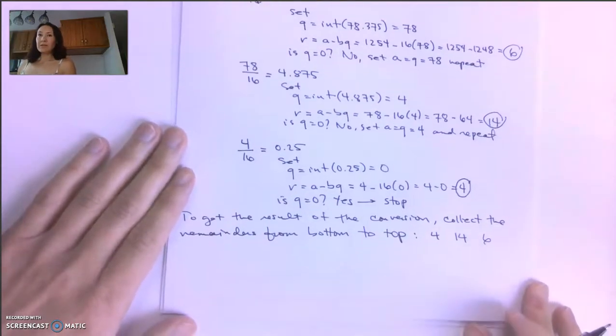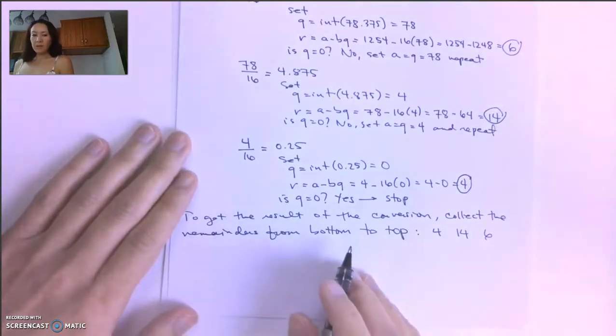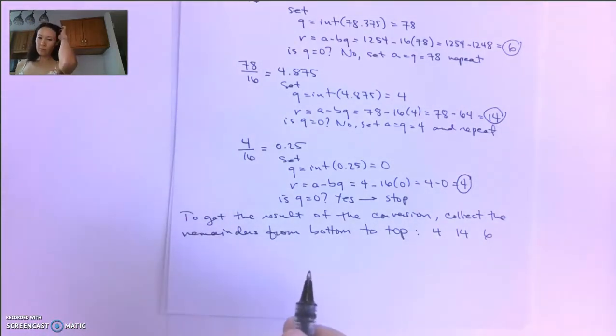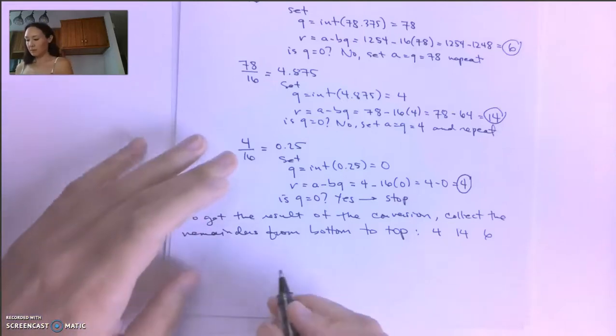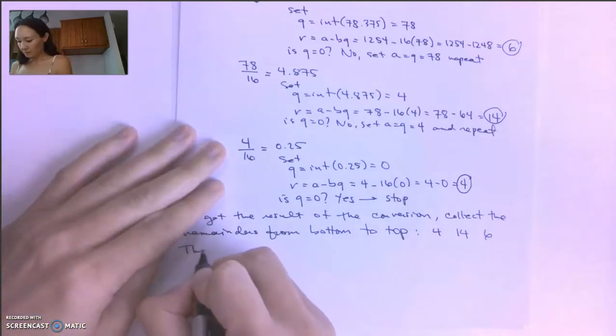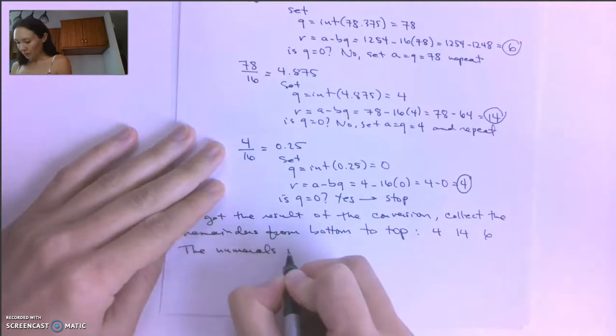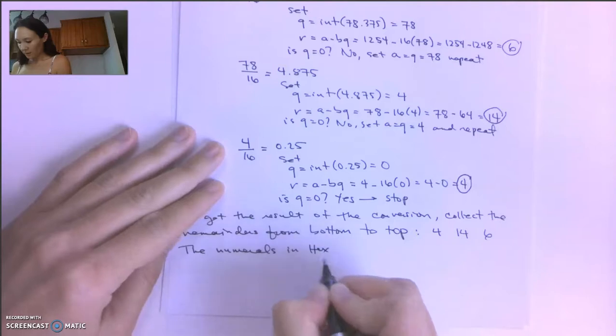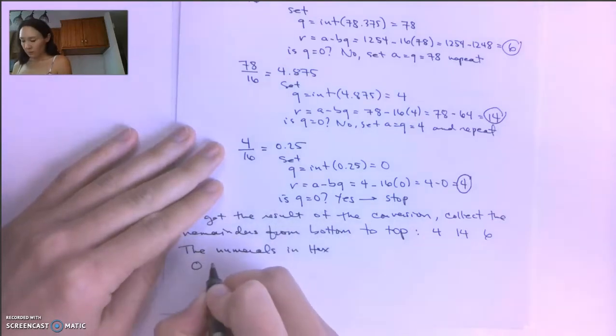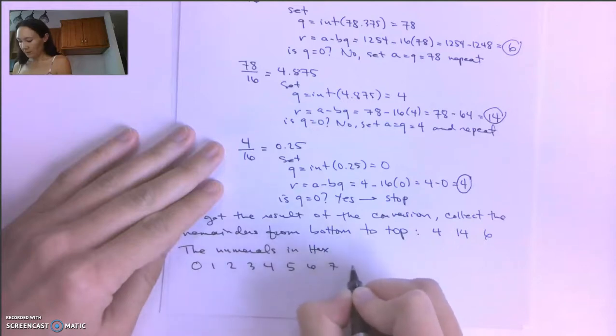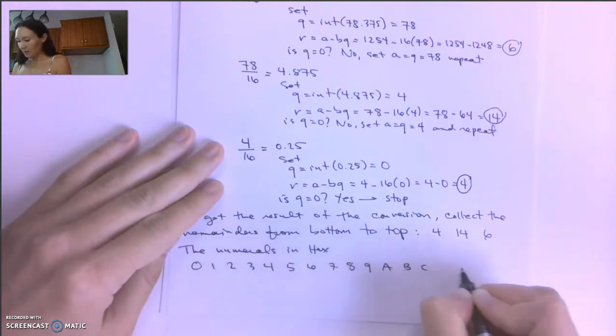Now something that's different about hexadecimal is, remember the fundamental numerals that make up the hexadecimal number system. The numerals in hex are 0, 1, 2, 3, 4, 5, 6, 7, 8, 9, A, B, C, D, E, F.